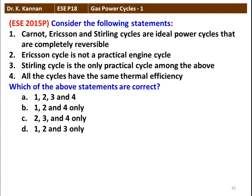The next question from the 2015 question paper. Consider the following statements: Statement 1 — Carnot, Ericsson, and Stirling cycles are ideal power cycles that are completely reversible. Statement 2 — Ericsson cycle is not a practical engine cycle. Statement 3 — Stirling cycle is the only practical cycle among the above. Statement 4 — all the cycles have the same thermal efficiency. Statements 1, 2, and 4 are correct. Statement 3 is not correct because the Stirling cycle is also a theoretical cycle. Option B is the correct answer.